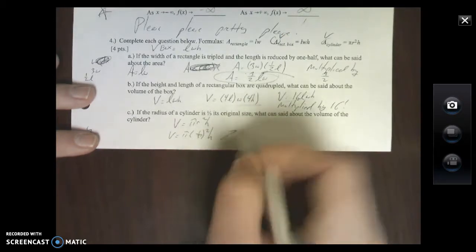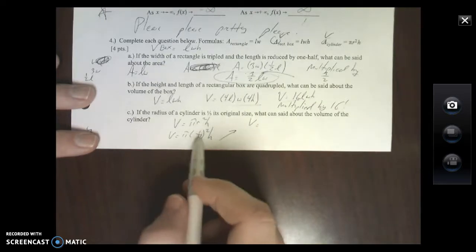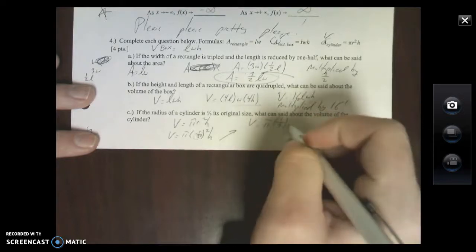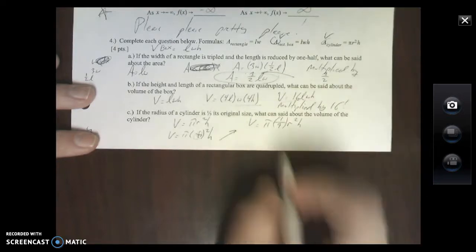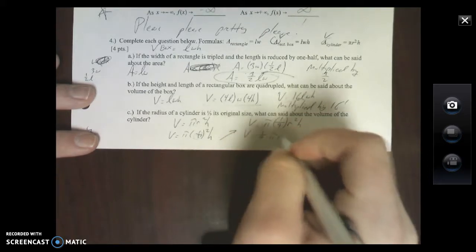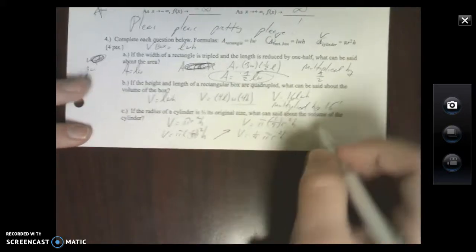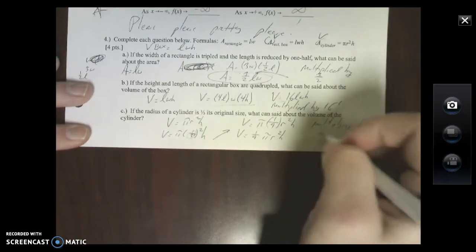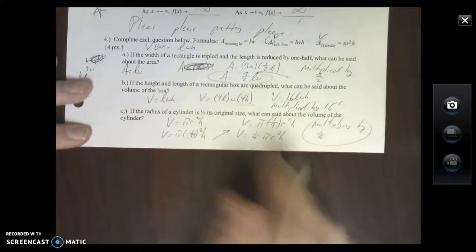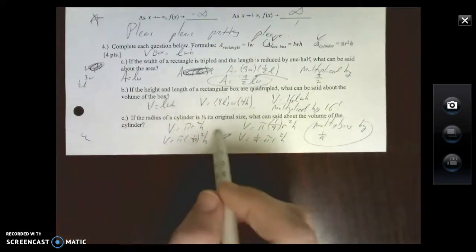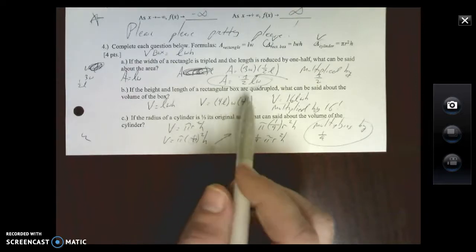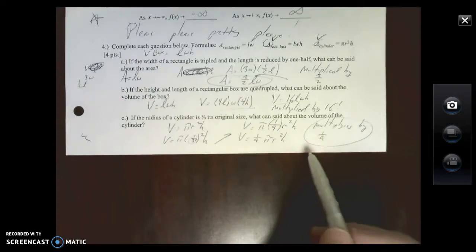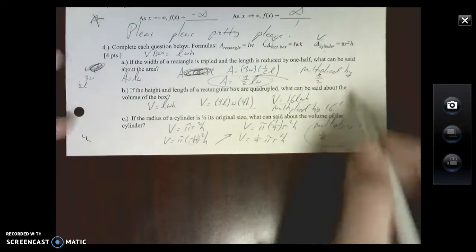Look what happens here: all I'm doing is I'm changing this to 1/3 and I'm squaring it. So if I square that I get 1/9 r²h. So if I pull that 1/9 out front, all I'm doing is multiplying by 1/9. I'm hoping you see these problems aren't bad - you're just manipulating the equation in order to see how your original changes.